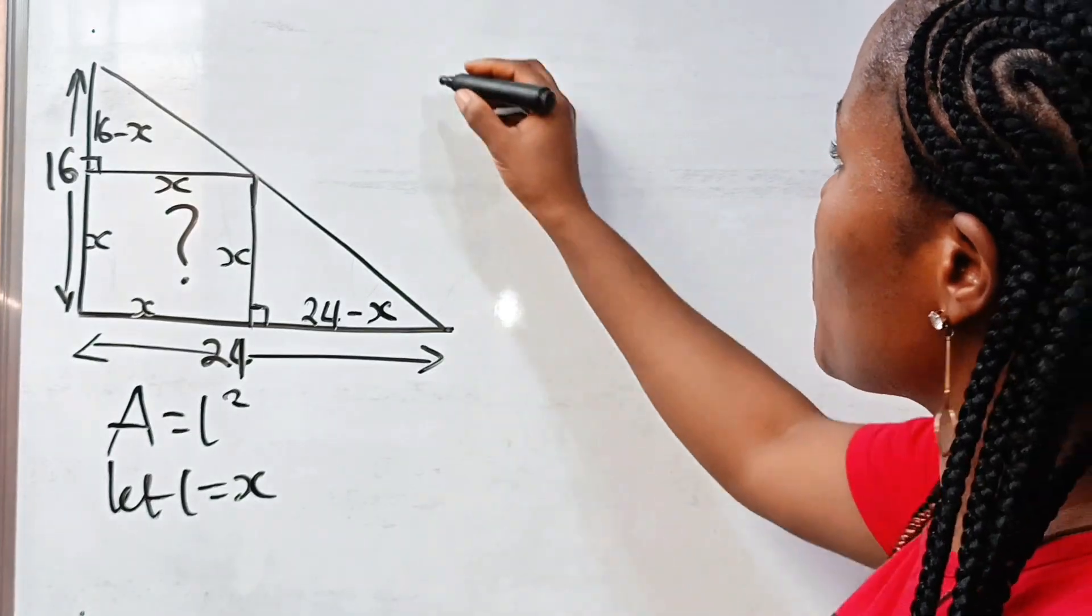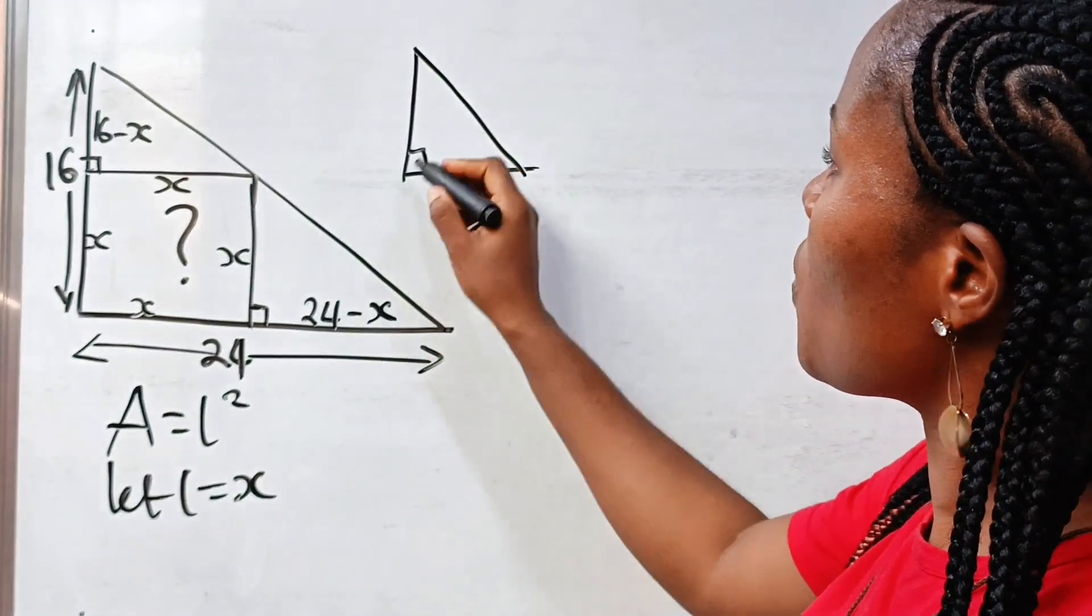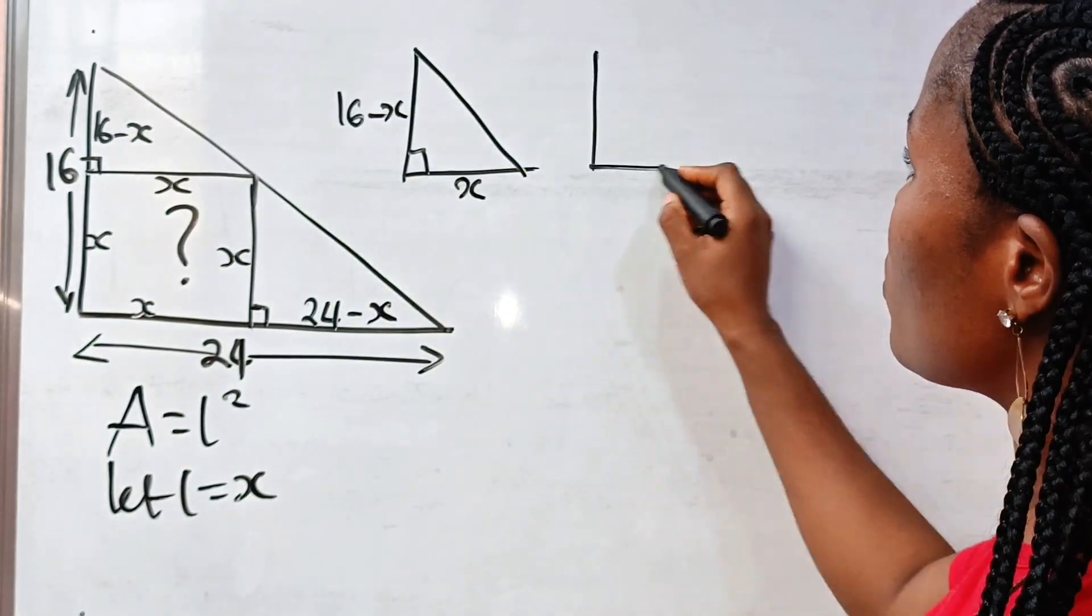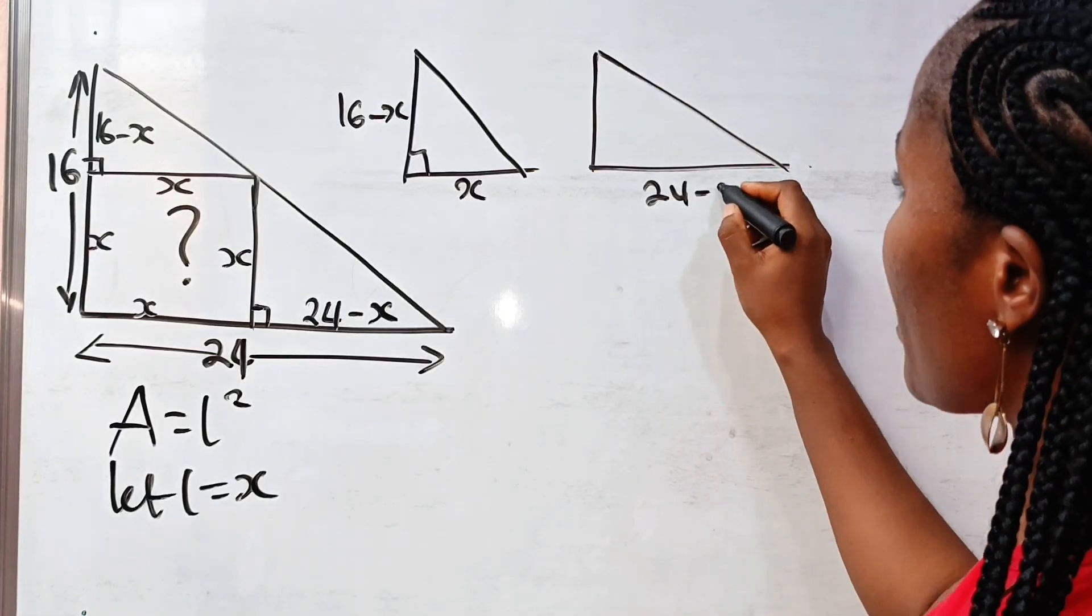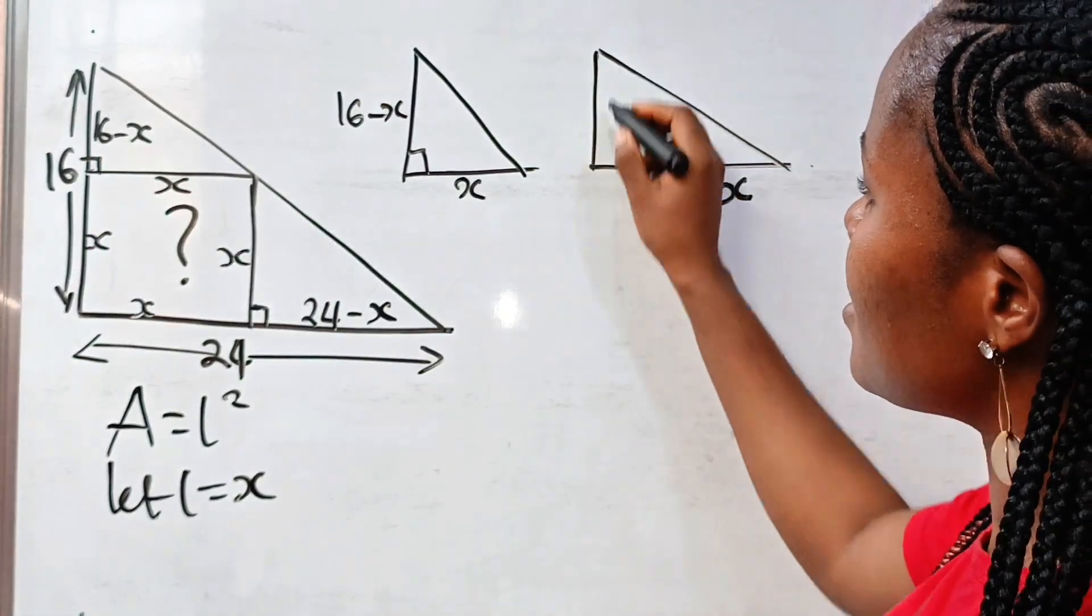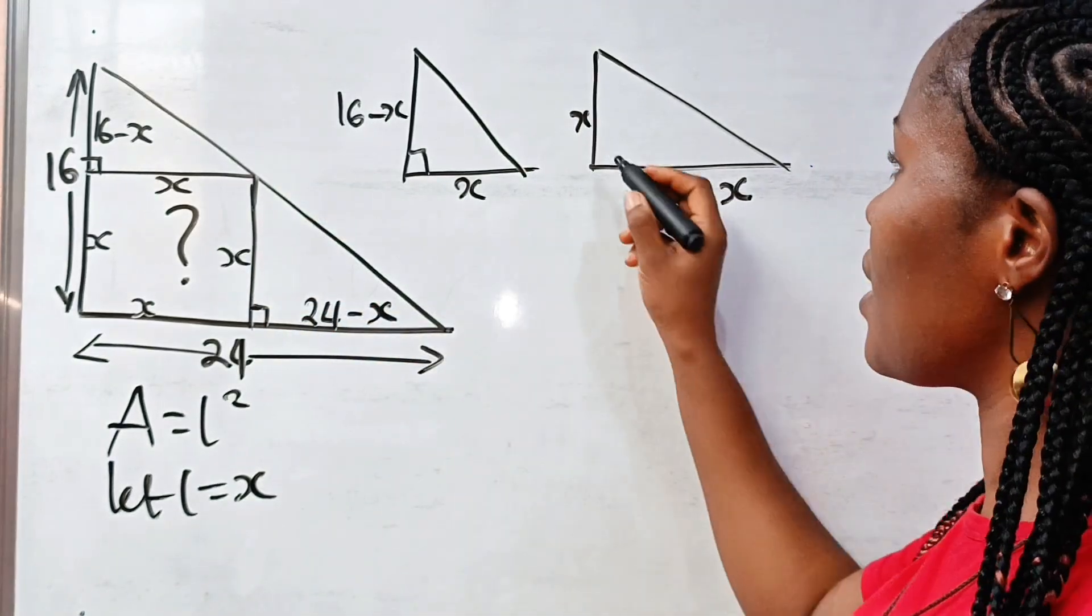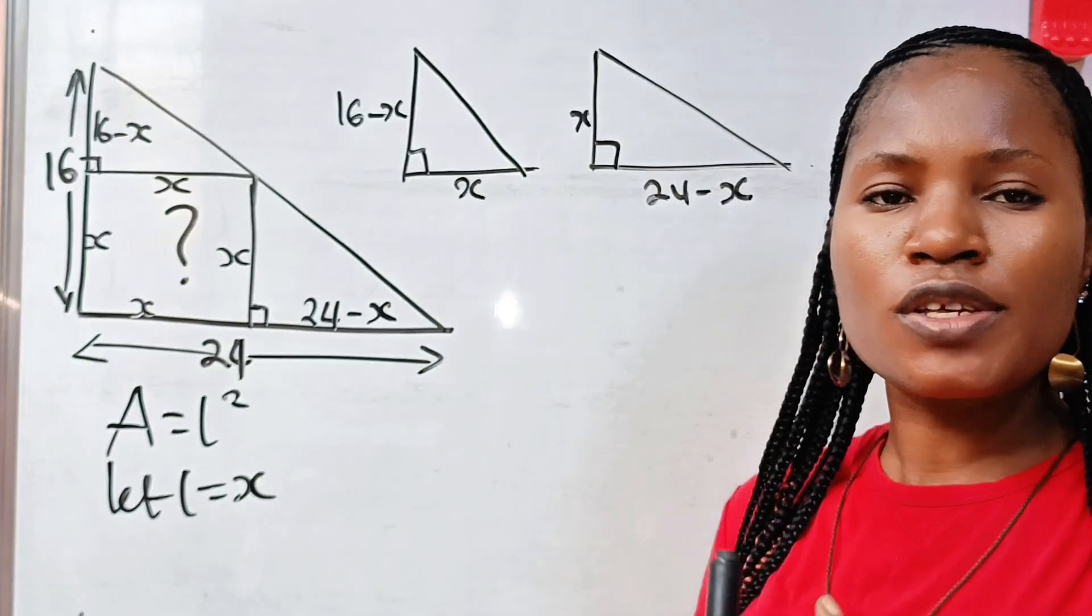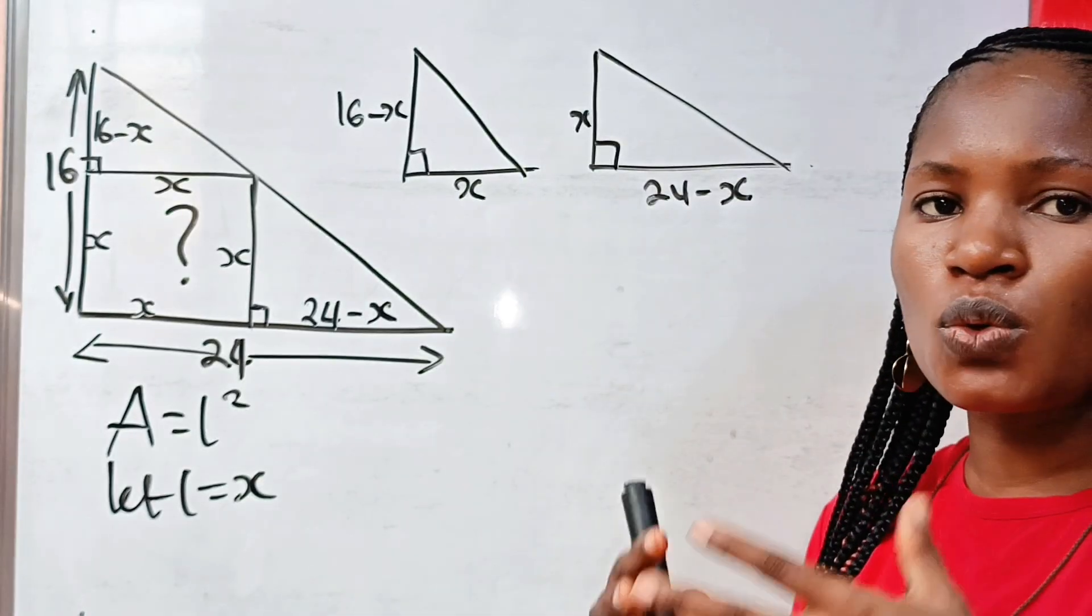Now, that means we have similar triangles. This is the first one. We have 16 minus X here and this is X. And this is the second one. We have 24 minus X here and this is our X for the second triangle. Now, if these two triangles are similar, then the ratio of their corresponding sides are equal.